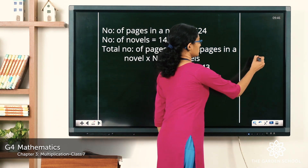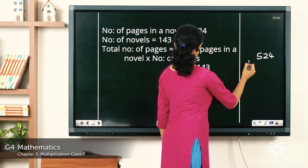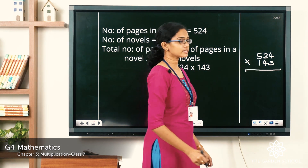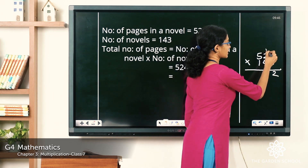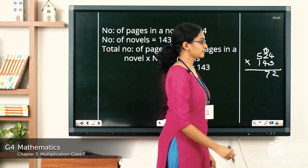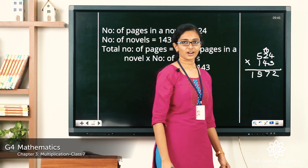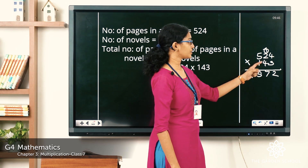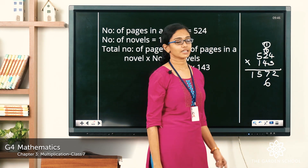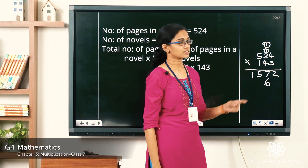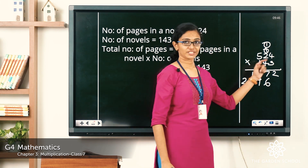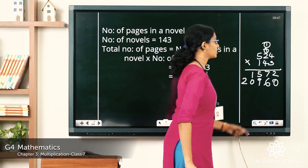So we do 524 × 143 — that is a 3-digit number into a 3-digit number. Starting with the ones: 3 × 4 = 12, carry over 1; 3 × 2 = 6 plus 1 = 7; 3 × 5 = 15. That is the first partial product. Now for the tens digit of the multiplier: 4 × 4 = 16, write the 6, carry over 1; 4 × 2 = 8 plus 1 = 9; 4 × 5 = 20. Place a zero at the end to keep place values correct.